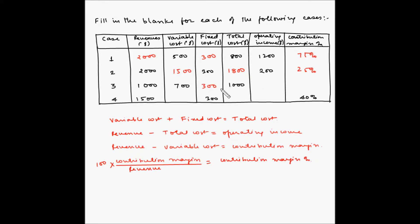Operating income is revenue minus total cost. Revenue is 1000 and total cost is 1000, so the operating income is zero. Contribution margin is revenue minus variable cost: 1000 minus 700 equals 300. Contribution margin percentage is 300 divided by 1000, multiplied by 100, which is 30 percent.